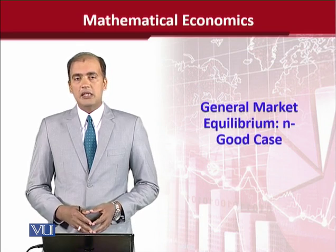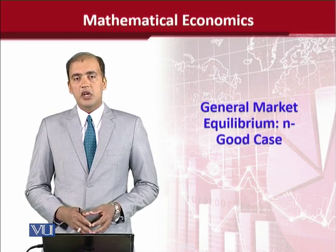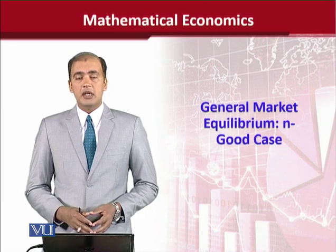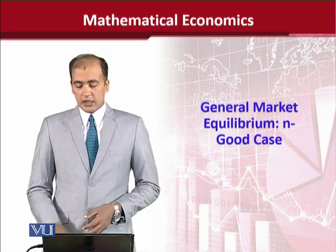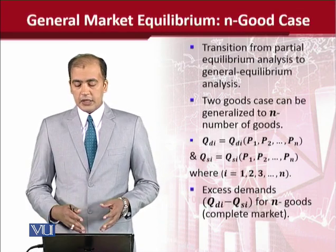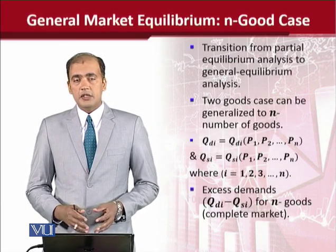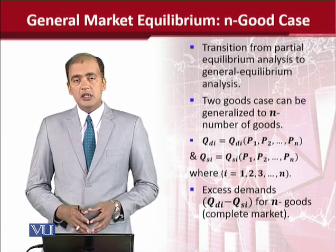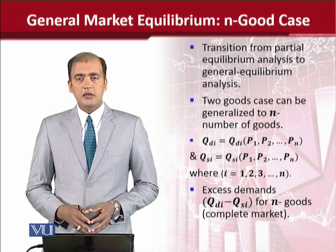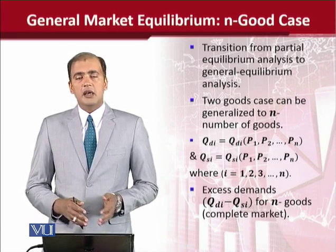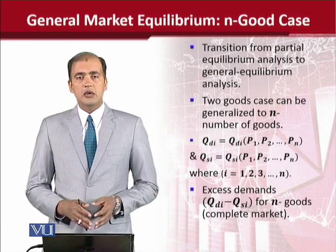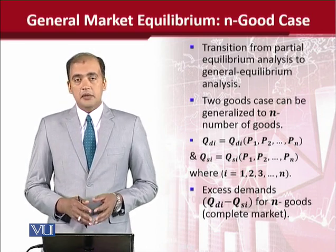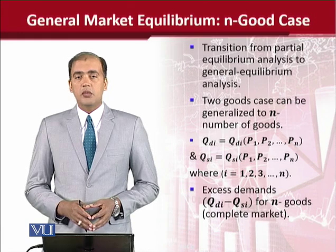Today we will talk about general market equilibrium and see how we can generally represent it in our economic literature. We will understand this phenomenon — the transition from partial equilibrium to general equilibrium. We all agree that we are moving to the general side: we were dealing with one good, and now we are dealing with more than one good. With more than two goods, we can deal with any number of goods.